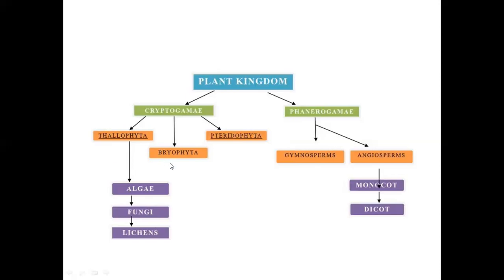Bryophytes are the amphibians of the plant kingdom. Then there are Pteridophyta. Pteridophyta are the first true vascular plants — xylem and phloem are found first in Pteridophyta alone. But there are xylem vessels, companion cells, and sieve tube cells. Pteridophytes are also called botanical snakes.